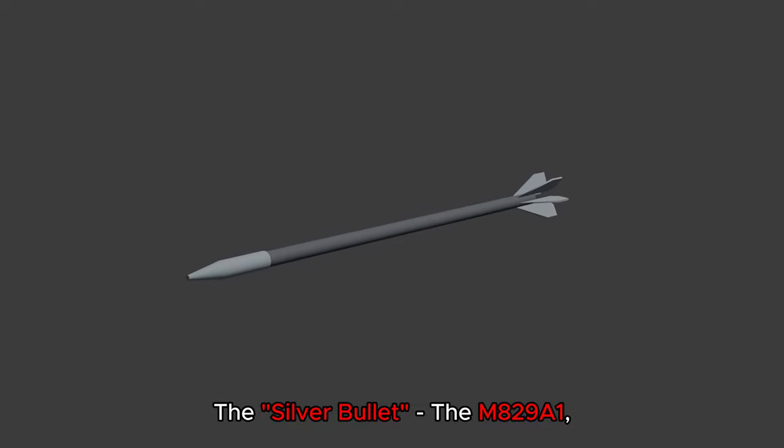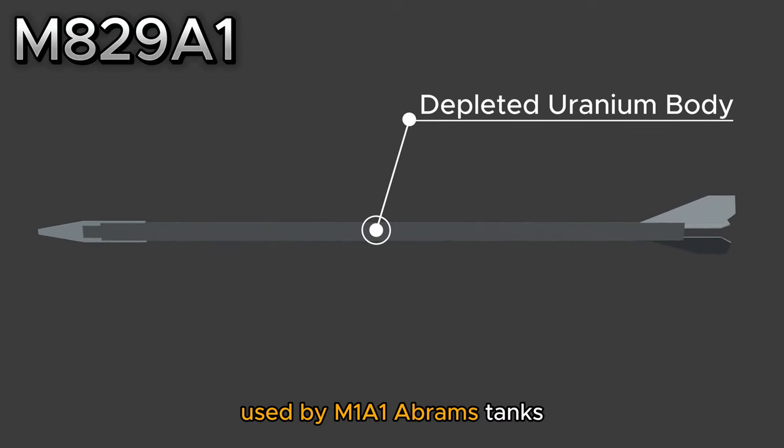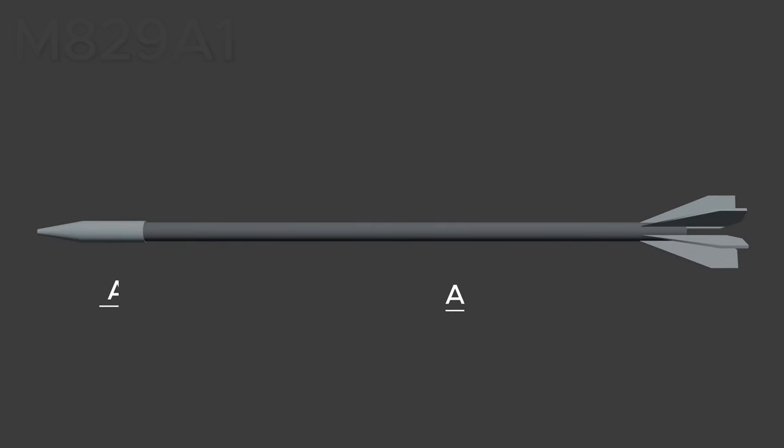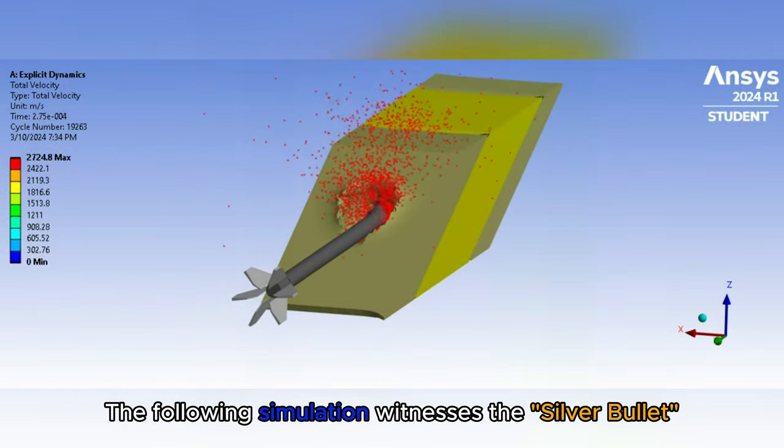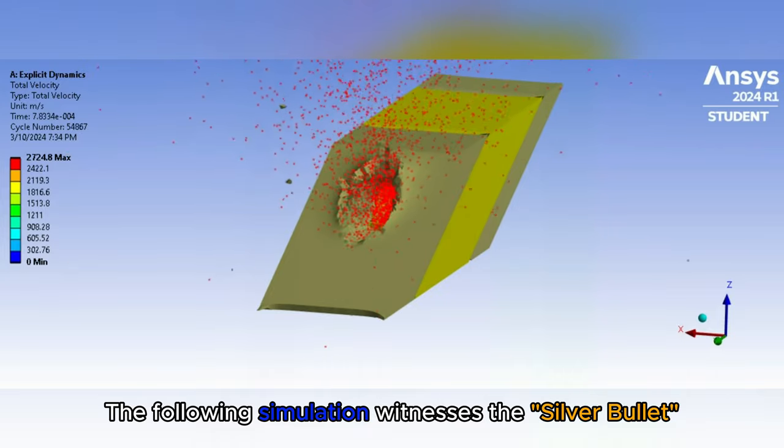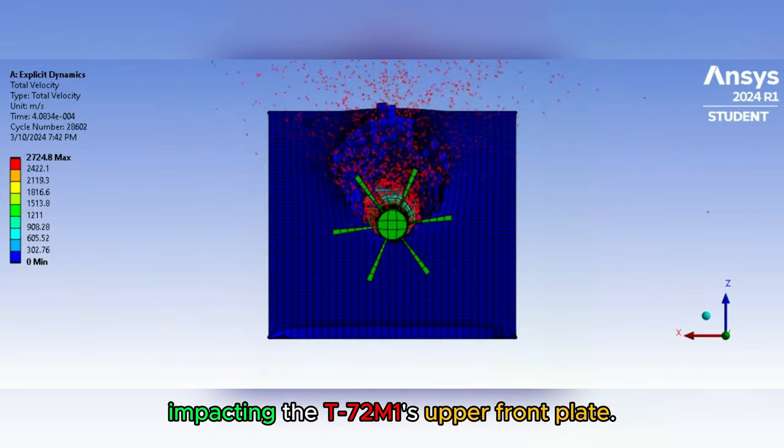The silver bullet, the M829A1, used by M1A1 Abrams tanks during Operation Desert Storm. The following simulation witnesses the silver bullet impacting the T-72M1's upper front plate.